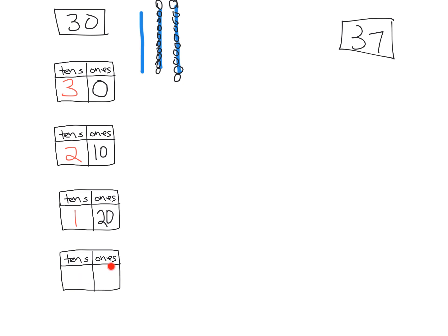Let's do one last one. I can take this last quick ten and chop it up into ten individual pieces. Now, how many tens do I have? I have no tens. How many ones do I have altogether? I now have 30 ones. So you can see how all of these equal 30 — they just look very different.